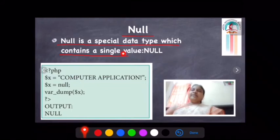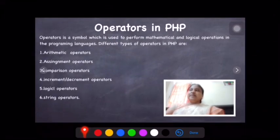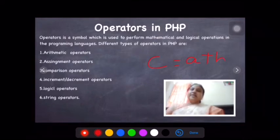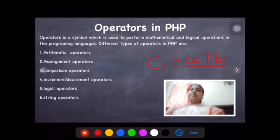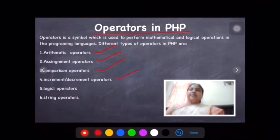Next — operators in PHP. An operator is a symbol which is used to perform mathematical and logical operations in a programming language. For example, C = A + B, where plus is the operator; or C = A * B, where multiplication is the operator. There are different types of operators in PHP: arithmetic operator, assignment operator, comparison operator, increment or decrement operator, logical operator, and string operator.